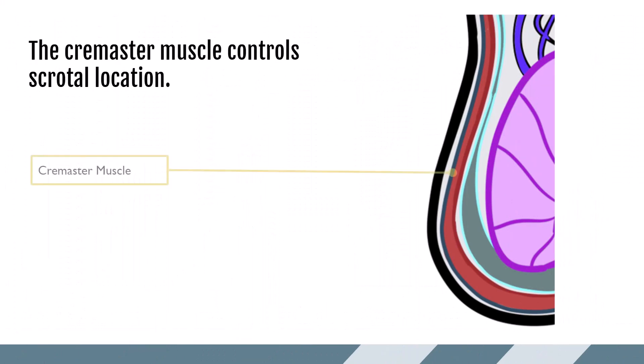The cremaster muscles are found on each side of the scrotum surrounding the testicle, epididymis, and spermatic cord. The cremaster muscle allows for temperature control of the testes, pulling the testicle and scrotum close to the body for warmth and/or protection, and relaxing away from the body to cool the scrotum and scrotal contents.